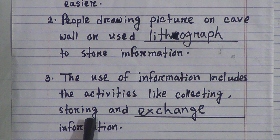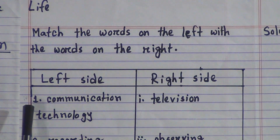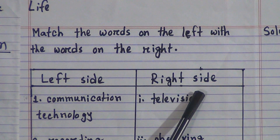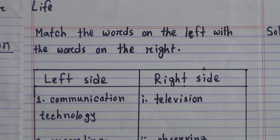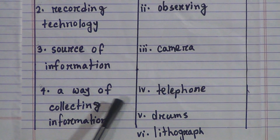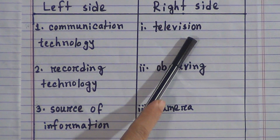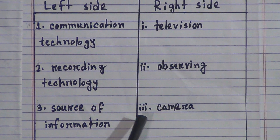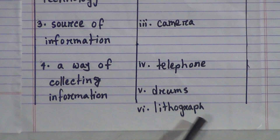Now we will discuss the matching exercise — match the words on the left side with the words on the right side. Left side: number 1, communication technology; number 2, recording technology; number 3, source of information; number 4, the way of collecting information. Right side: number 1, television; number 2, observing; number 3, camera; number 4, telephone; number 5, drums; number 6, lithograph.